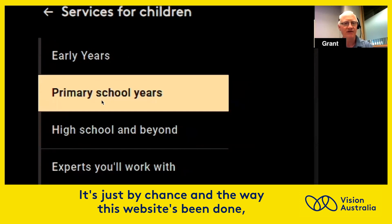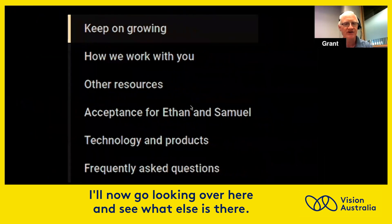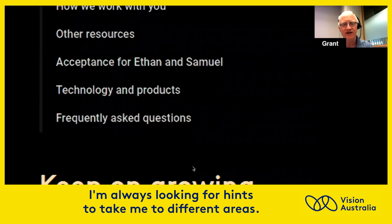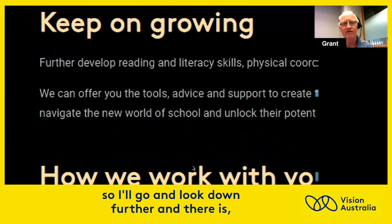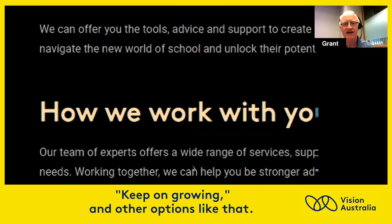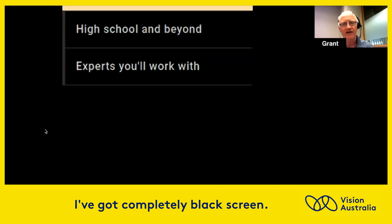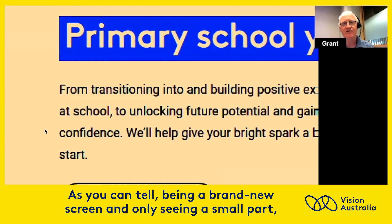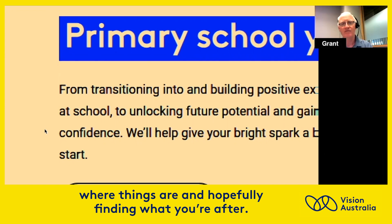So it's just by chance, in the way this website's been done, I can tell instantly there's something else on the right-hand side, so I'll go looking over there. I'm always looking for hints to take me to different areas. There's obviously more data below, so I'll go and look further down. Even now, when I go left, I've got a completely black screen — it's only that I knew there was stuff before that I go looking for it. Being a brand new screen and only seeing a small part, you spend a lot of time initially just working out where things are and hopefully finding what you're after.